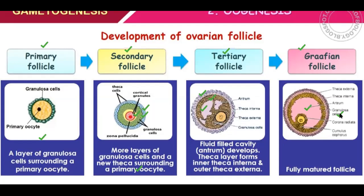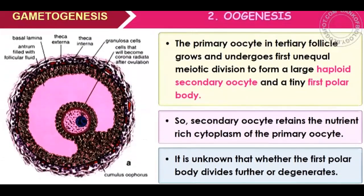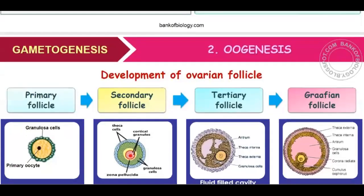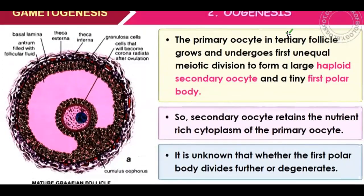Granulosa cells take a distinct layer, then corona radiata cells form. In the tertiary follicle, the primary oocyte undergoes an unequal meiotic division — it becomes a large secondary oocyte and a first tiny polar body. The polar body degenerates.